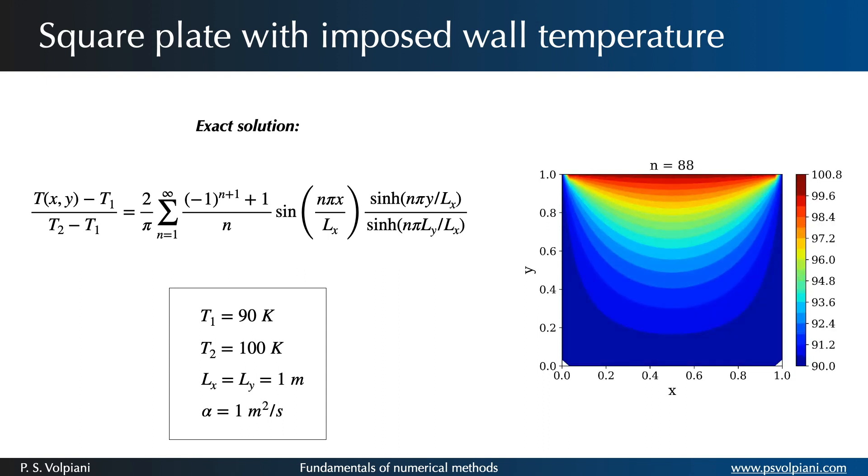Note that there is a sum in the solution. The more terms we include in the sum, the closer we will get to the correct solution. Here n varies from 1 to 200, which was found to be an acceptable range, as you can see.